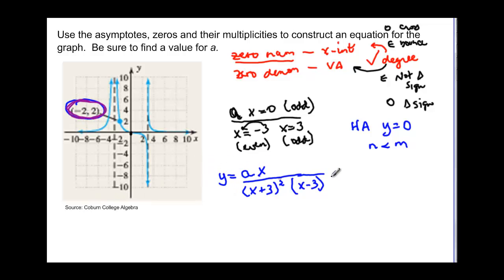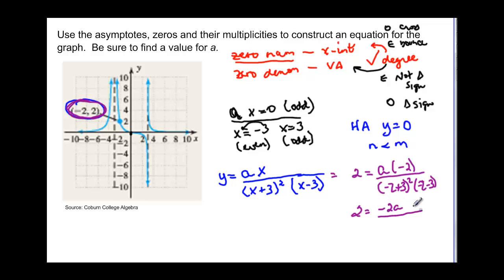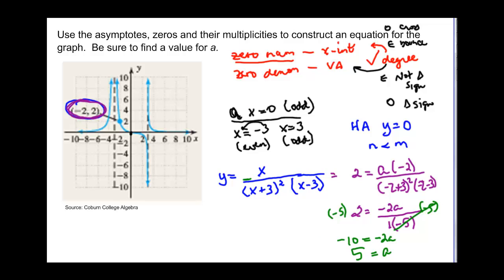Now we use the point (−2, 2) to solve for a. Plugging in: 2 = a(−2) / [(−2 + 3)² · (−2 − 3)] = −2a / [1² · (−5)] = −2a / (−5). Multiplying both sides by −5: −10 = −2a, so a = 5. We replace a with 5, and this is our final function.